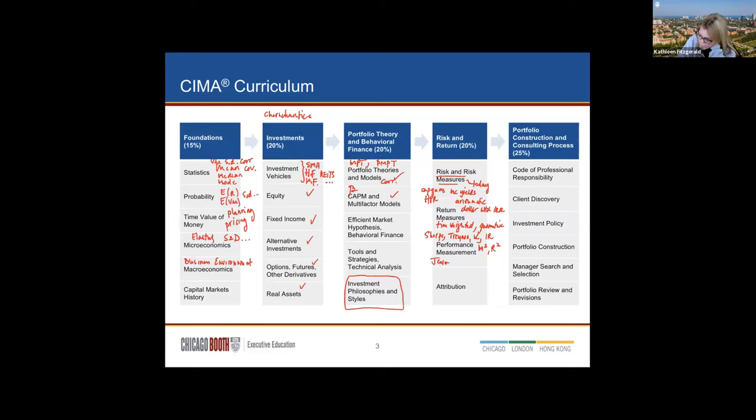Asset pricing models, the capital asset pricing model, and multi-factor models. We'll think about the environment, efficient market hypothesis, behavioral finance, technical analysis. And then we'll think in general about what are different investment philosophies and styles that we would have that would guide your putting together these portfolios.